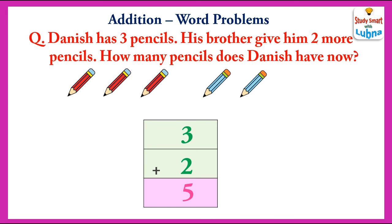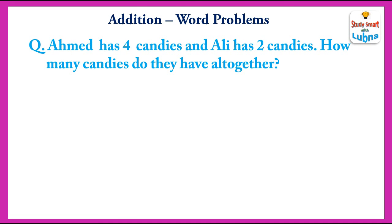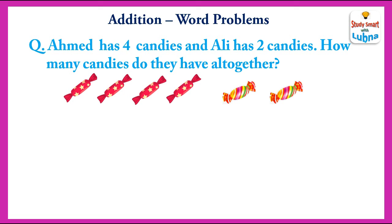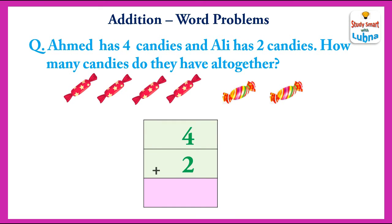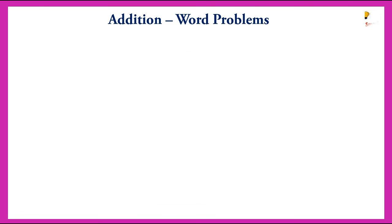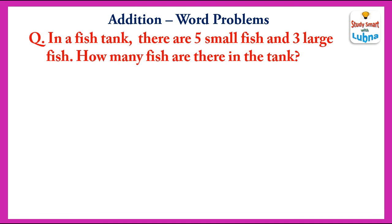Another problem. Ahmad has four candies and Ali has two candies. How many candies do they have altogether? For this we will add the number of candies, so four plus two equals six. Ahmad and Ali both have six candies altogether.